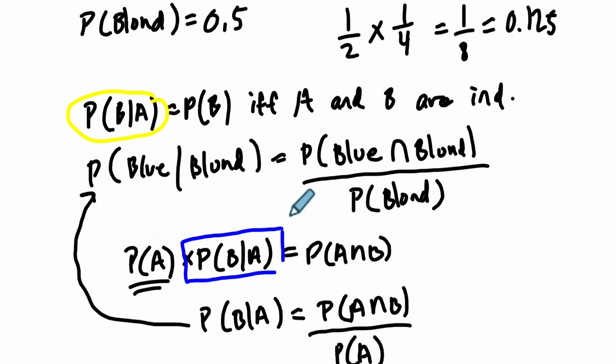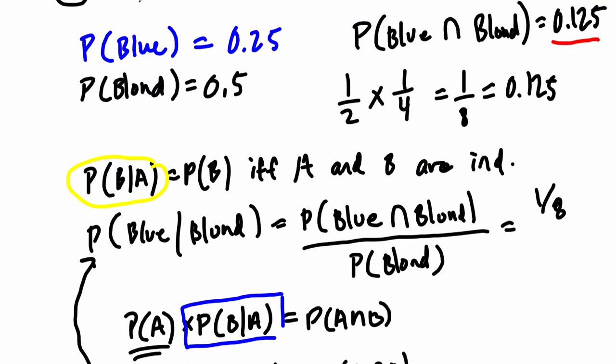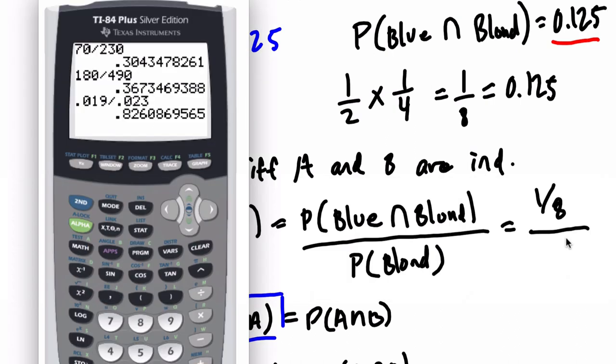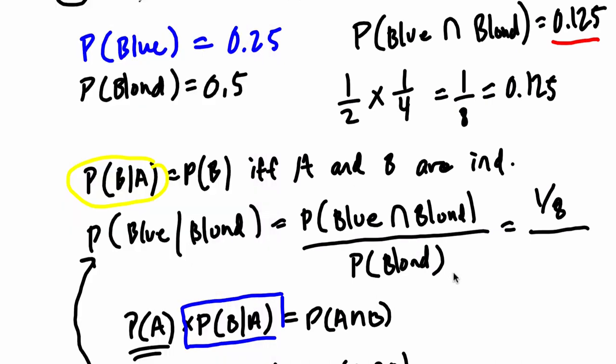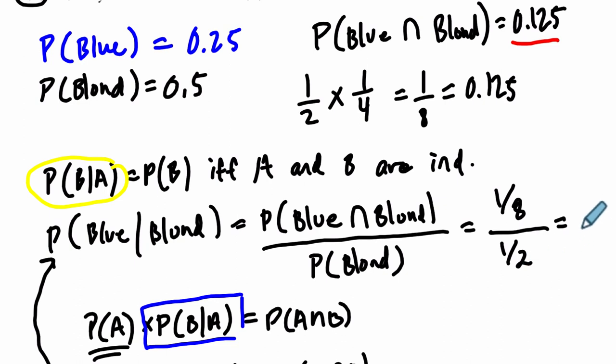Long story short, if you divide the probability of having blue eyes and blonde hair, that was one-eighth, and if you take one-eighth and you divide it by one-half, the probability of being blonde, how many halves go into an eighth? Take one-eighth and times it by two, the reciprocal of one-half, and that's a fourth.